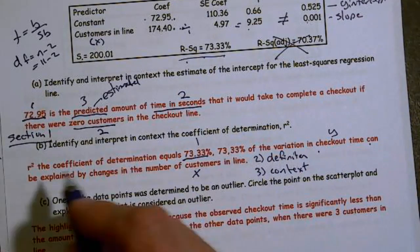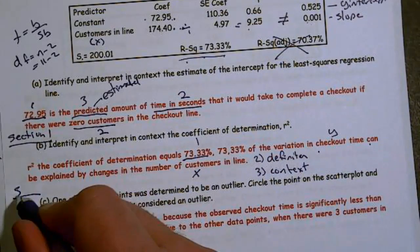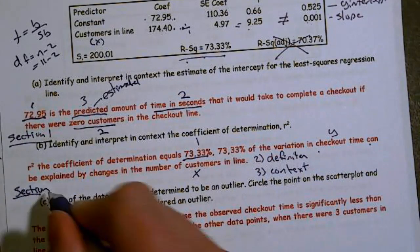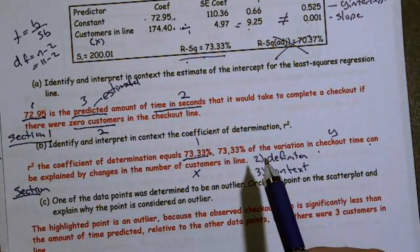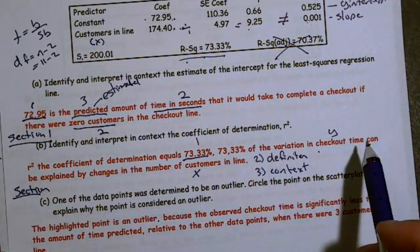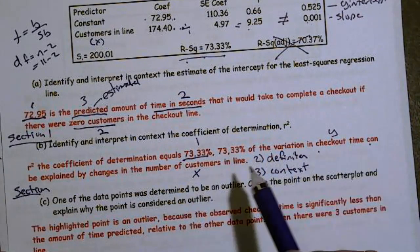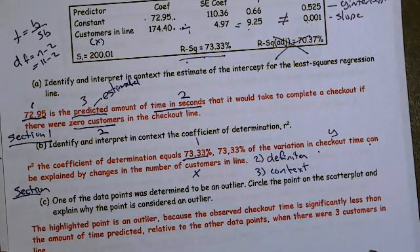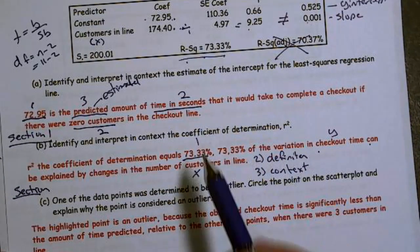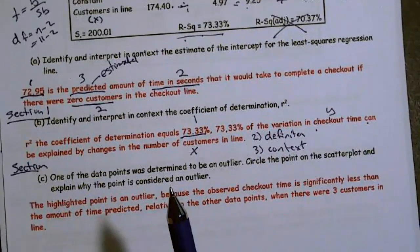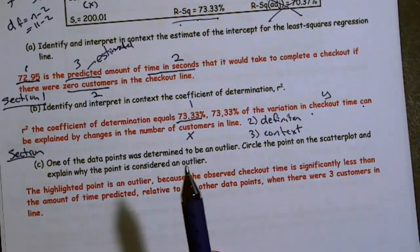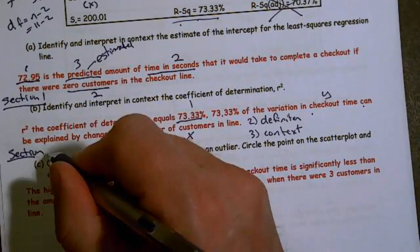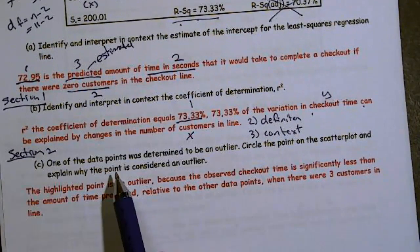Let me explain how this could have been done partially. We could have said 73.3% of the variation in Y can be explained by changes in X. That would have been the definition, but not in context, and that would have gotten partial, assuming I had the 73.3% correctly identified. Moving on to section three.